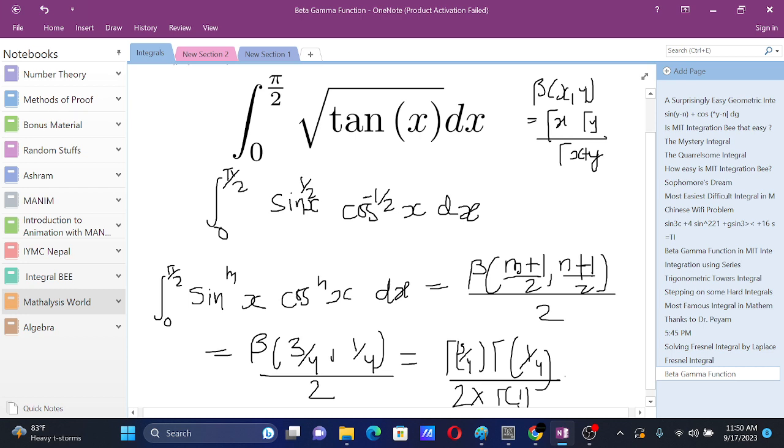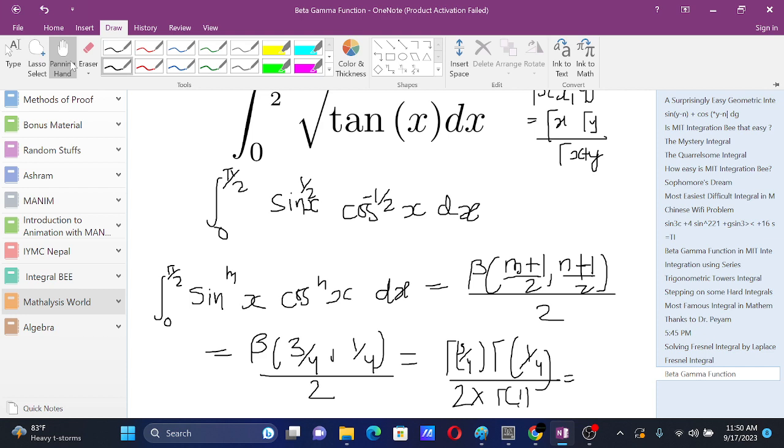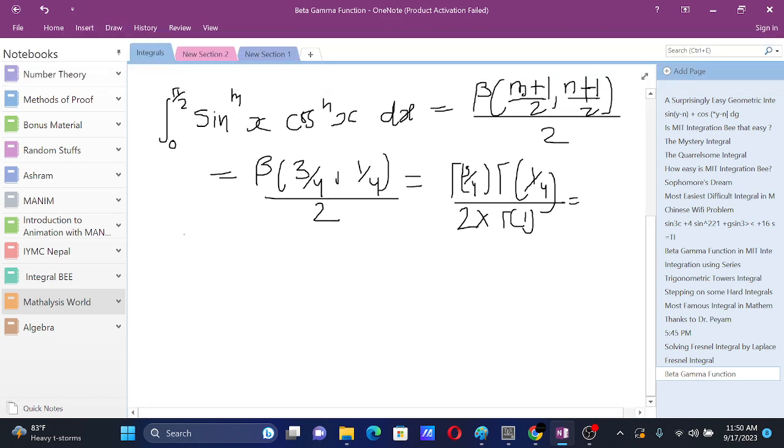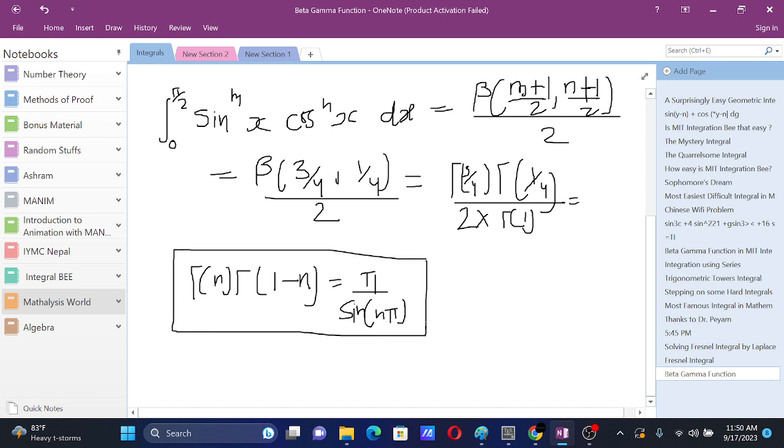For the product of gamma(3/4) and gamma(1/4), we need to know another rule of gamma function: gamma(n)gamma(1-n) equals π/sin(nπ). Now we will use this property and we get π/sin(π/4).